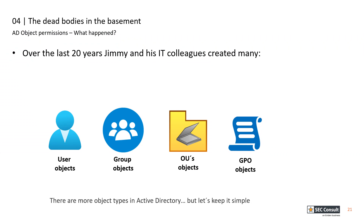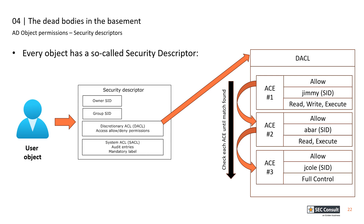Let's look at the first topic: AD object permissions. In the early 2000s, Jimmy started deploying Active Directory. Over time, he and colleagues created thousands of different AD objects. Some may have been domain administrators, others just delegated for specific administration tasks. There are 12 different object types in Active Directory that you can create. Every Active Directory object has a security descriptor — a data structure containing security-related information associated with an object.